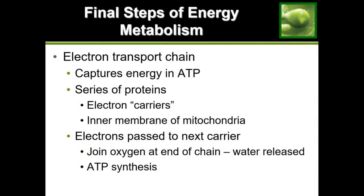We have finally come to our last step that we have all been waiting for. We were collecting hydrogens and electrons this whole time so that we could reach our cashier at the end and cash them out for a bunch of energy. Remember we said that cashier was the electron transport chain, so now we are at this cashier and we can go ahead and cash out those hydrogens and electrons for energy.